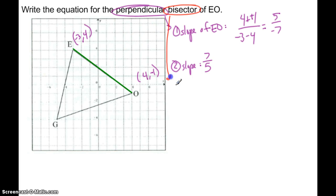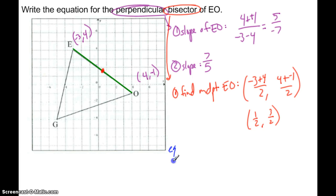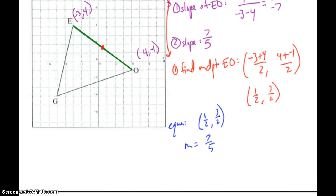The bisector part means I need to find the midpoint of EO. The midpoint is the average of the endpoints: negative 3 plus 4 over 2, and 4 plus negative 1 over 2 — giving midpoint of one-half, three-halves. My equation has point (one-half, three-halves) and slope seven-fifths, so in point-slope form: y minus three-halves equals seven-fifths times (x minus one-half).